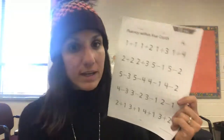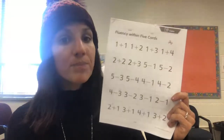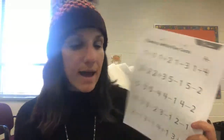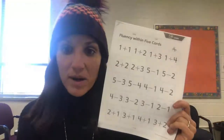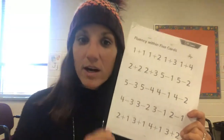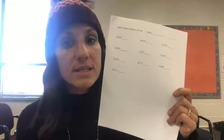Fluency cards within five — one of our kindergarten standards is to be fluent in adding and subtracting to five. So if you want to take some time, or have your child cut these out, they can be little flashcards that you can practice with. We will start doing addition and subtraction timed fluency tests, where your child will need to solve these equations, so those will be coming up very soon.